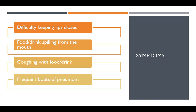Much of the time when a person has dysphagia, there will be symptoms such as difficulty keeping lips closed, food or drink spilling from the mouth, and coughing or throat clearing when the person eats or drinks. However, sometimes the patient does not present with noticeable symptoms. When the symptoms are absent, dysphagia may only be suspected when the individual has frequent bouts of pneumonia.